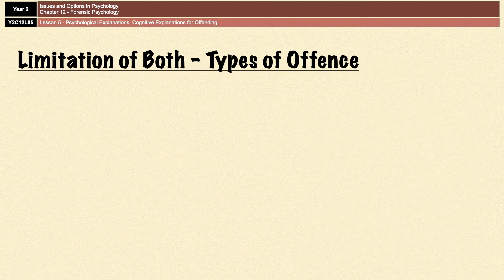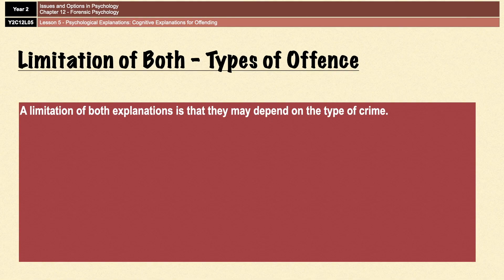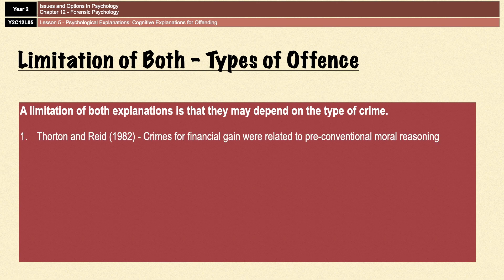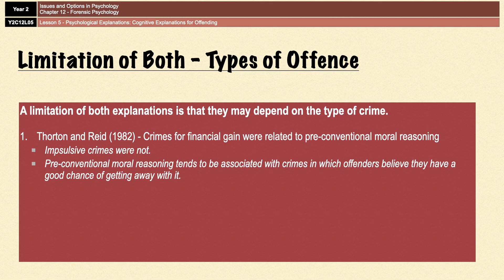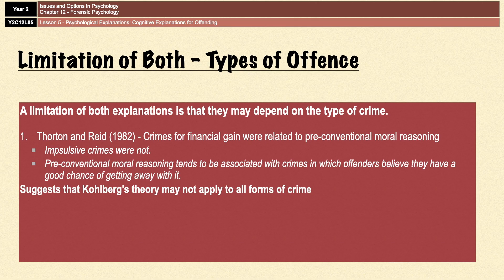A limitation is that both moral reasoning and cognitive distortions depend highly on the type of offense being committed. Thornton and Reid in 1982 found that crimes committed for financial gain were related to pre-conventional moral reasoning, whereas impulsive crimes weren't. Pre-conventional moral reasoning tends to be associated with crimes where offenders believe they have a good chance of getting away with it, whereas impulsive crimes aren't associated with that level of thinking by their very nature. This suggests that Kohlberg's theory might not apply to all forms of crime.